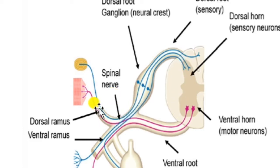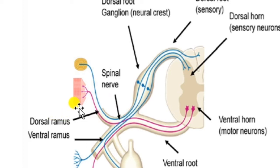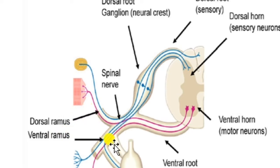After emerging, the spinal nerve is divided into the dorsal ramus, ventral ramus, and ramus communicans. The dorsal ramus supplies nerves to the dorsal or posterior side of the body, the ventral ramus supplies nerves to the ventral or anterior side of the body, and the ramus communicans goes to the autonomic nervous system — specifically the sympathetic ganglion.